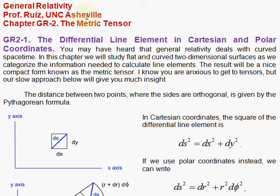General Relativity Chapter 2, Section 1, the Differential Line Element in Cartesian and Polar Coordinates.